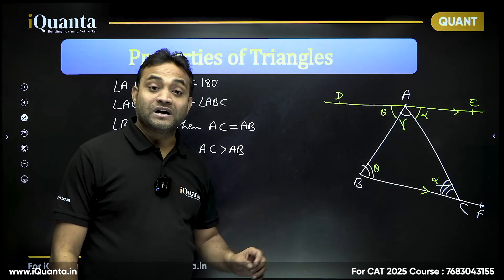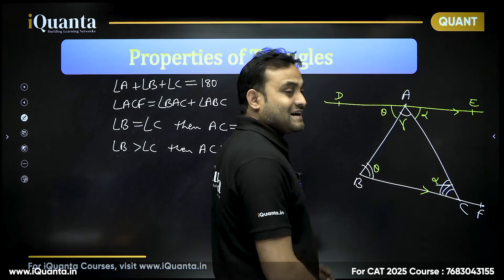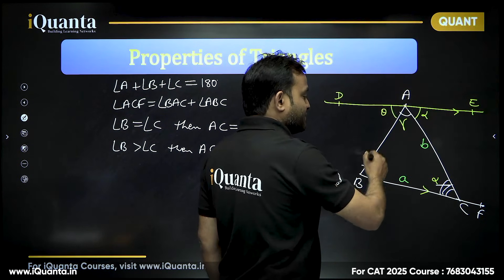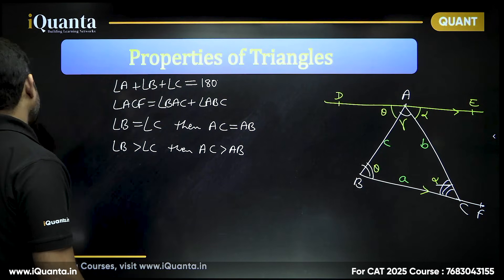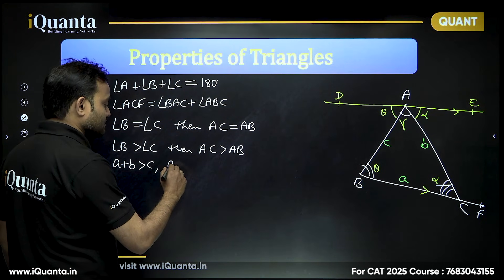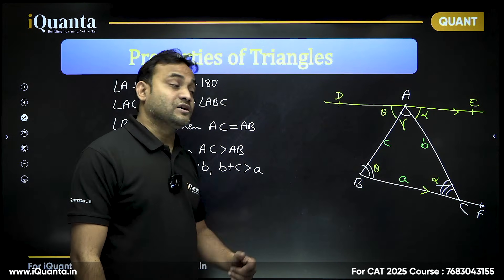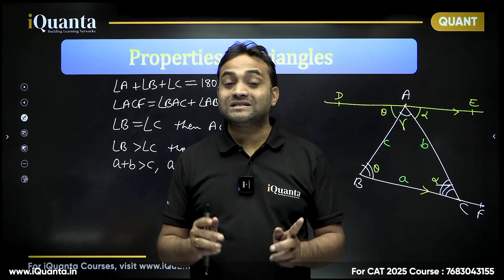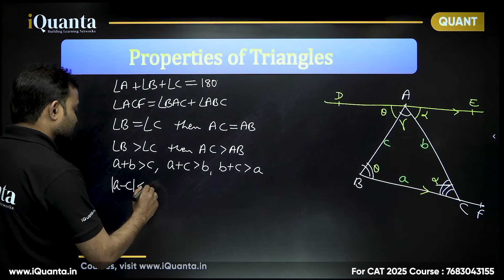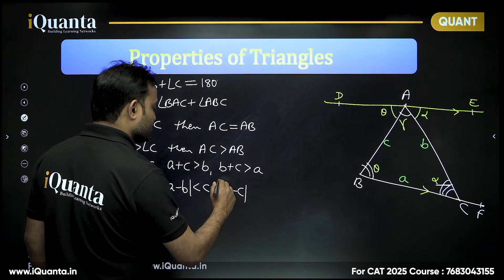For properties of sides in triangle ABC: side BC is denoted as 'a', side AC as 'b', and side AB as 'c'. The sum of any two sides must be greater than the third side: a+b > c, a+c > b, and b+c > a. Also, the absolute difference between any two sides must be less than the third: |a−c| < b, |a−b| < c, and |b−c| < a.